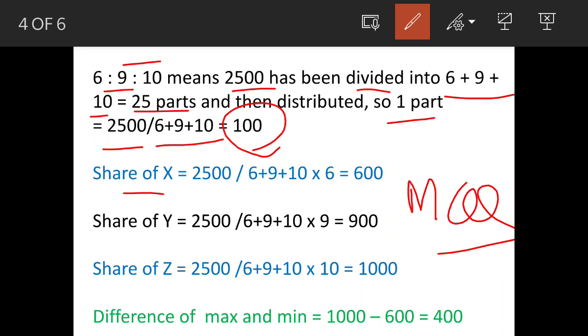What is the share of X? One part (2,500 ÷ 25) times the ratio 6, so the share of X is 600. Similarly, the share of Y is 900, and the share of Z is 1,000. You can see Z gets the maximum and X gets the least, so the difference is 400.